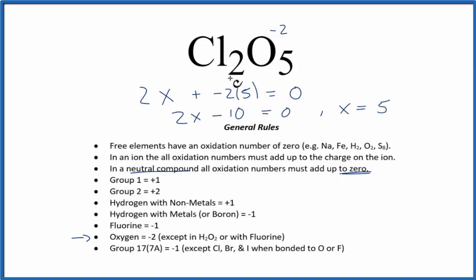So the oxidation number on each one of the chlorine atoms is plus five.